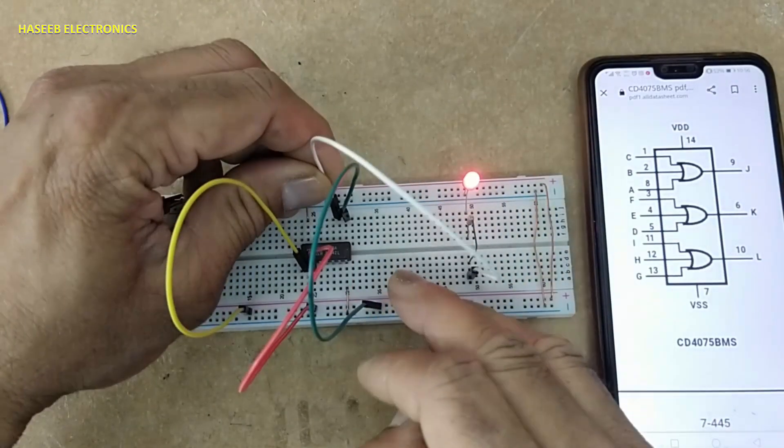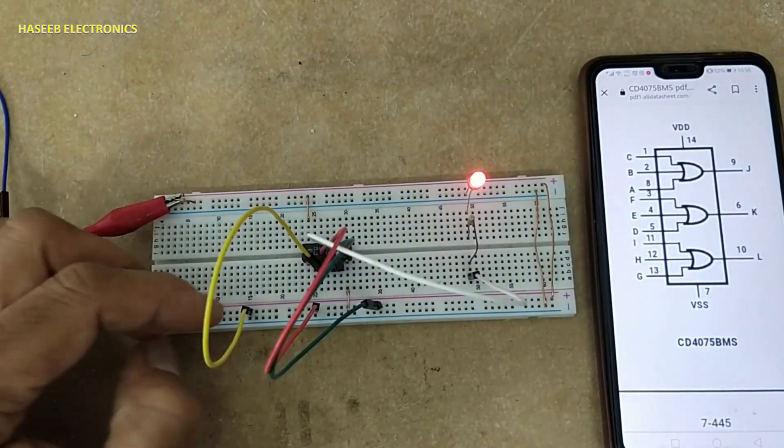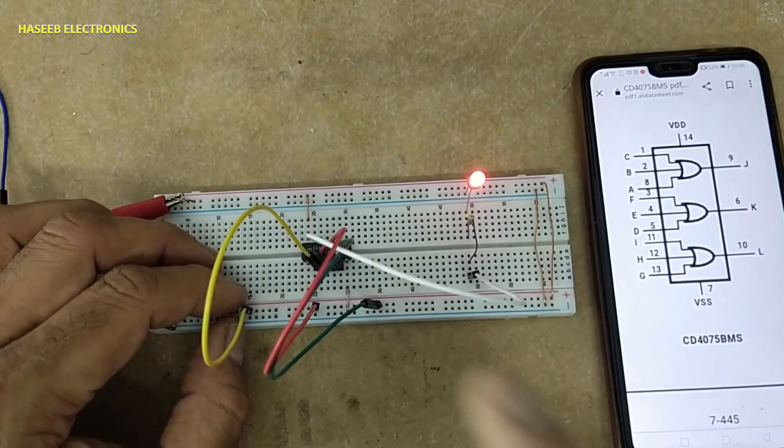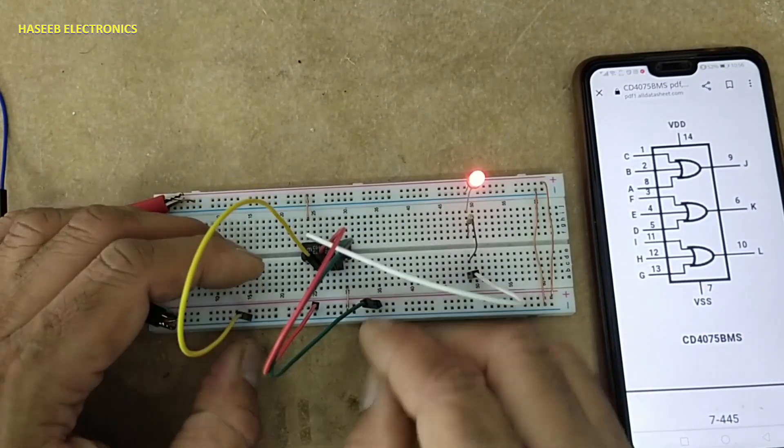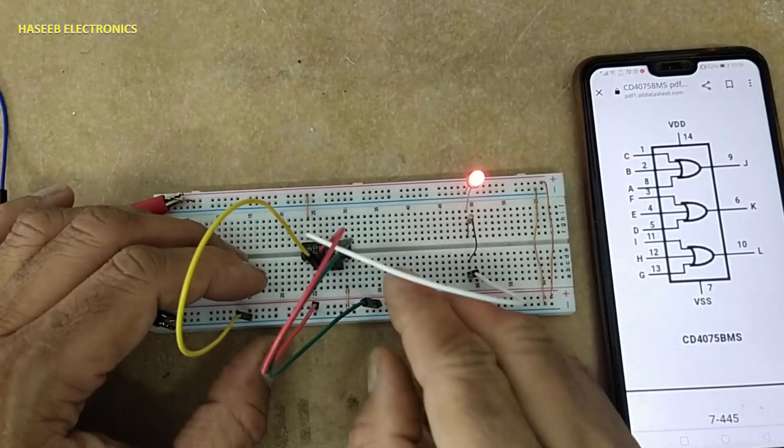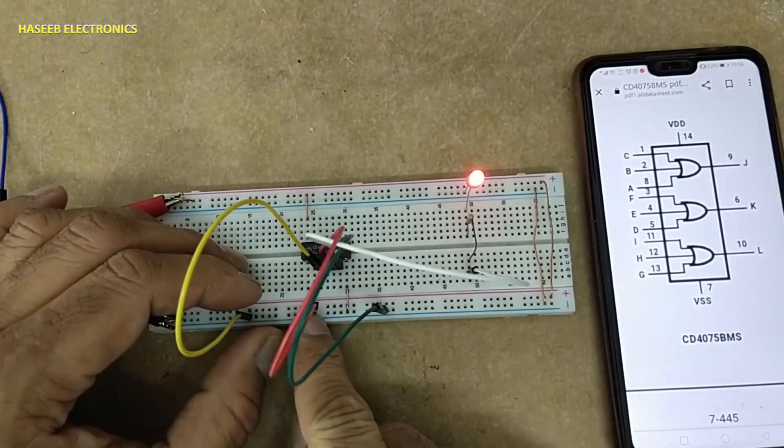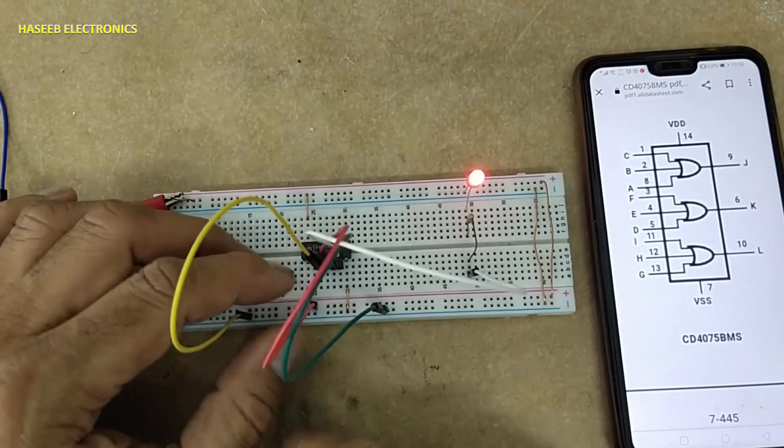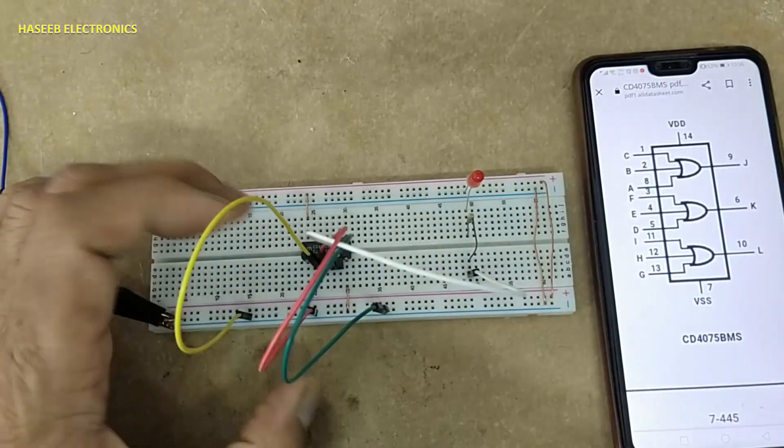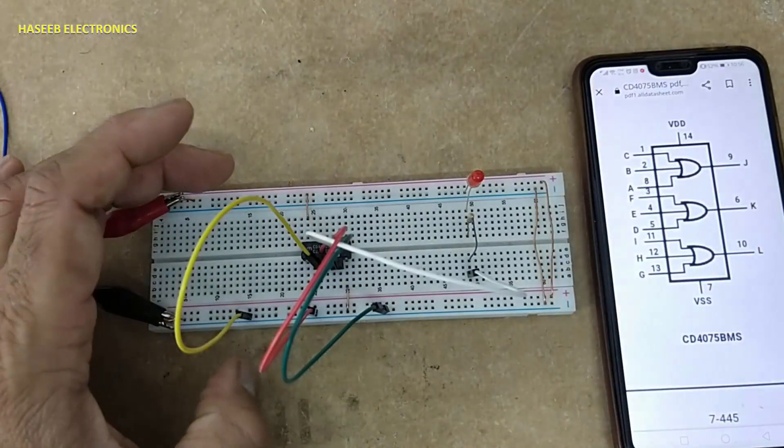Pin number 6 is output, pins 3, 4, 5 are inputs. All inputs high, output high. Any one high or two inputs high, output is high. When one input is high, output is high. All inputs low, output is low.